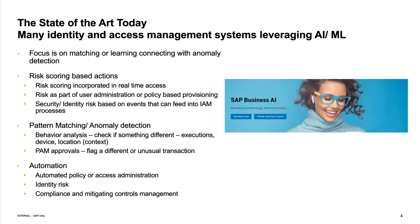We've done a lot in the solutions today, mostly around matching or machine learning capabilities — looking at different types of behavior and trying to find anomalies or things that might be of concern. We can flag these and incorporate them into a risk scoring engine or pattern matching and automation. In the solution we have a risk scoring engine that takes into account the user, what organization they're part of, whether that particular role or entitlement is critical or sensitive, or has some kind of revenue associated with it.